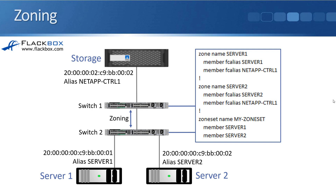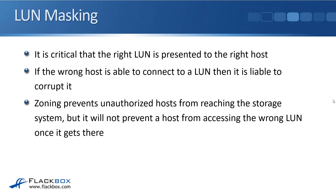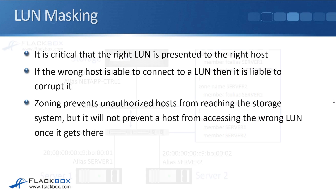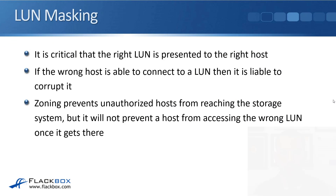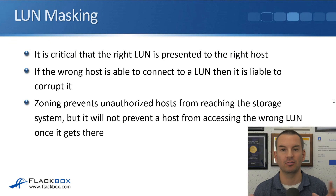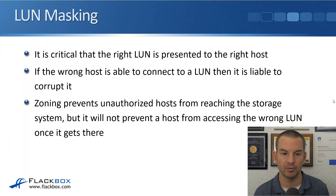So that is our zoning done. Now the servers can connect to the storage, but the servers cannot connect to each other. However, you may notice that both servers are able to connect to the storage system — so that's secured them from each other, but at that point they both get access to everything on the storage system as far as the switches are concerned.